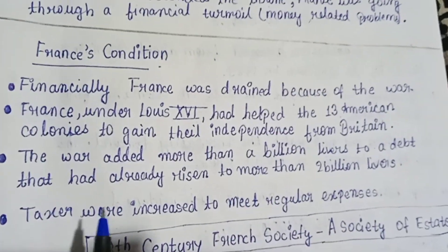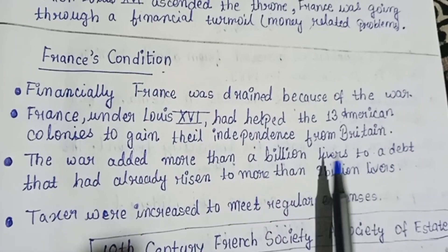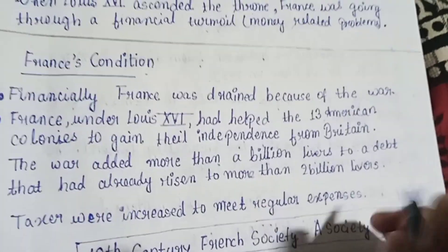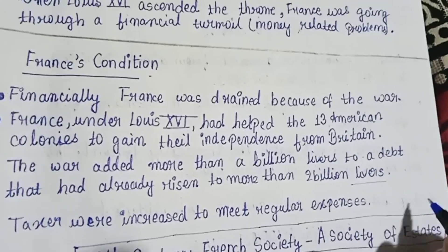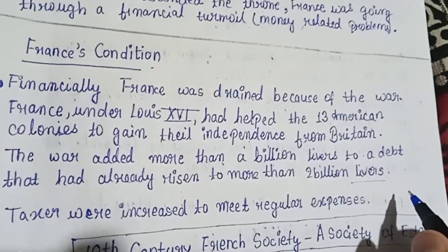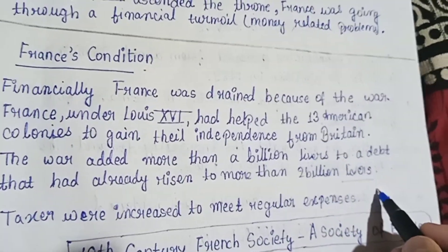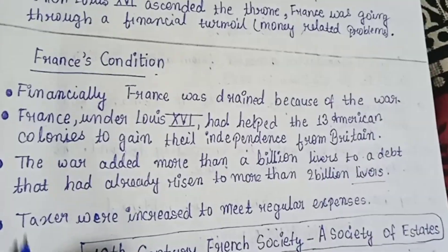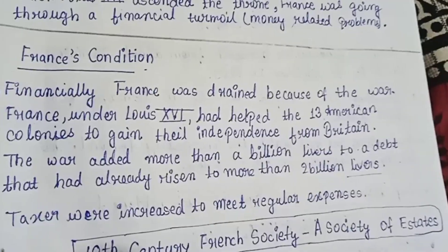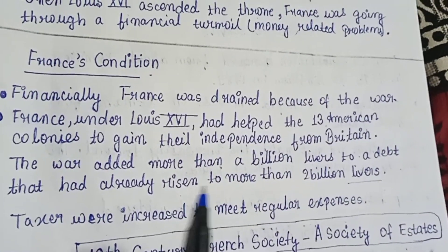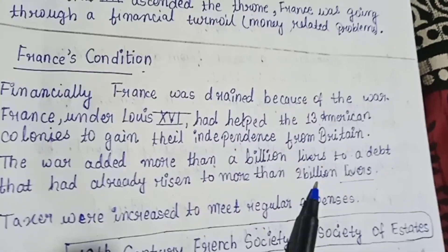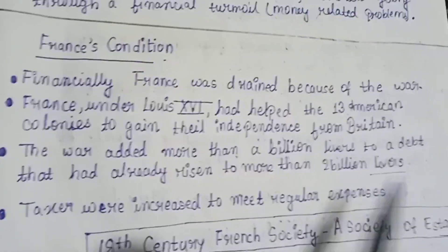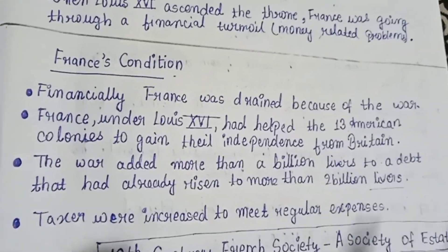This was because of the war. The livre was a currency used in France in the 18th century. The total debt amounted to about 2 billion livres.